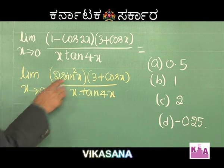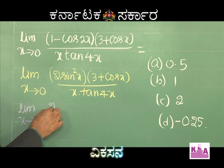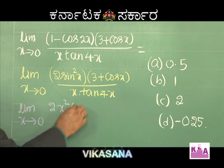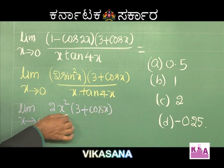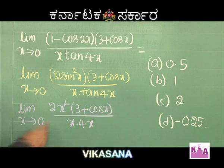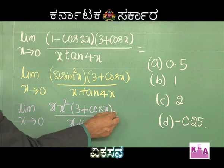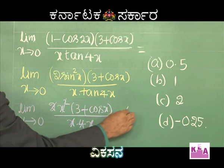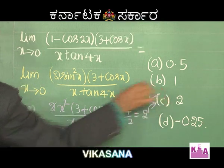When limit x tends to 0, we can replace sin x with x and tan 4x with 4x. So the expression becomes 2x² times (3 + cos x) divided by x times 4x, which simplifies to 2x²(3 + cos x) divided by 4x². The x² cancels, giving (3 + cos x) divided by 2. Substituting x = 0: (3 + 1) / 2 = 4/2 = 2. Therefore, option C is correct.